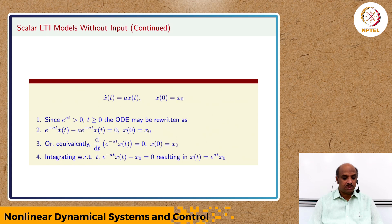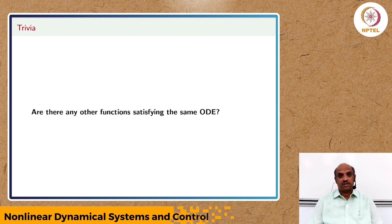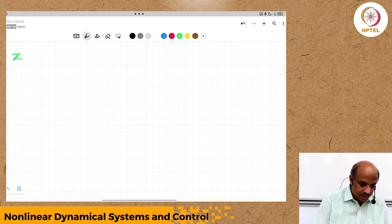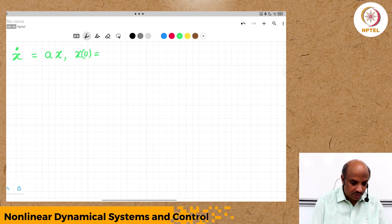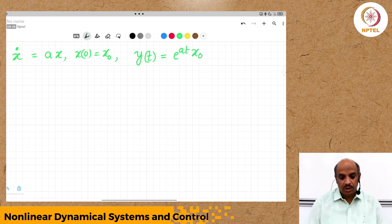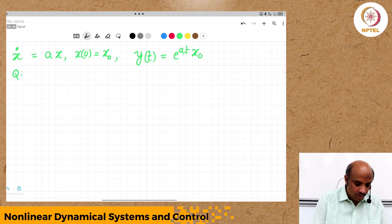We do have a solution to this scalar linear time-invariant ODE. The most fundamental question we ask is: are there multiple answers? Are there any other functions satisfying the same ODE? This is very important — once we know the answer, we can claim many things. So we have x_dot = ax, we know x(0) = x_0, and we know one solution: let us call it y(t) = e^(at)·x(0). The question is: is there any other solution?